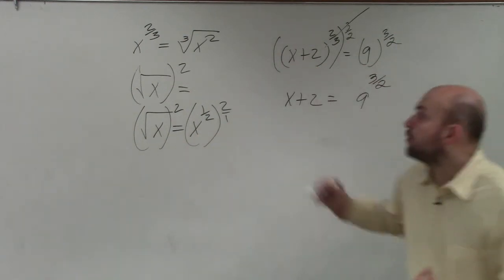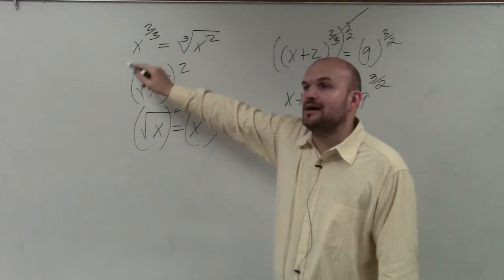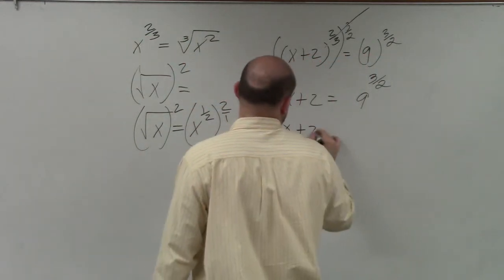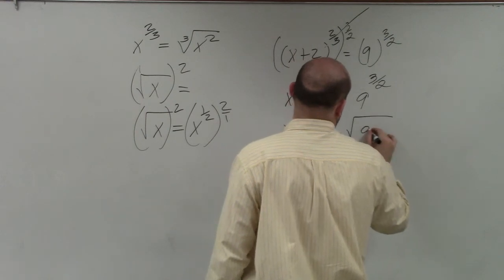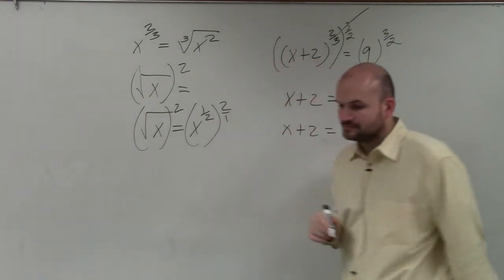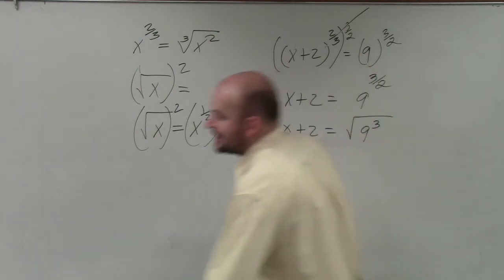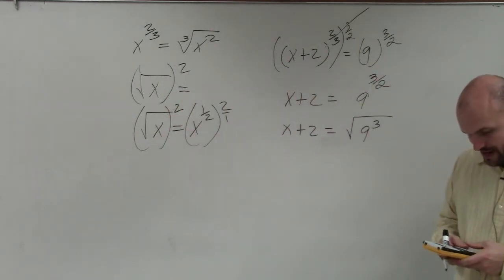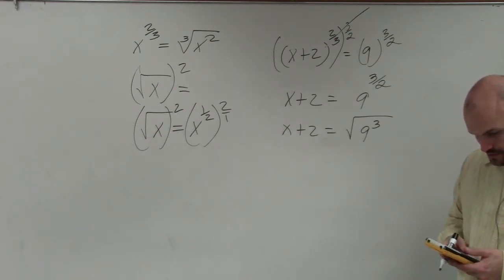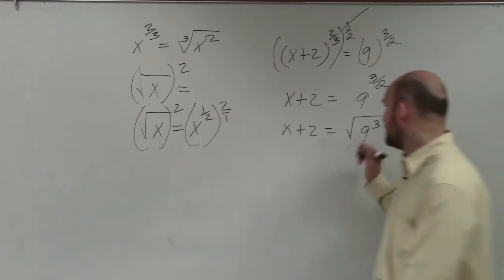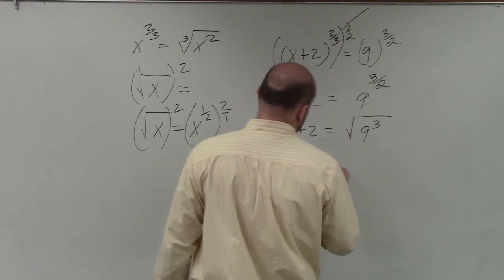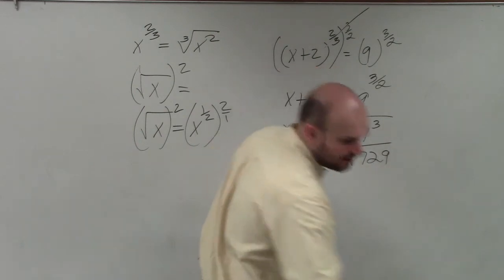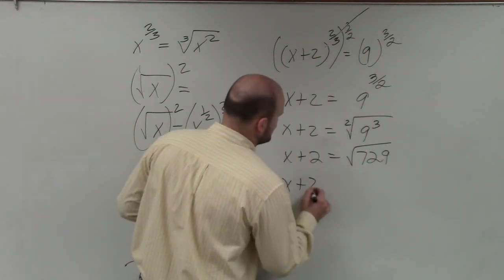It's important to understand how to rewrite a number from rational exponents to radicals. I can write x plus 2 equals the square root of 9 cubed. And 9 raised to the third power is 729, so we have x plus 2 equals the square root of 729. The square root of 729 is 27.